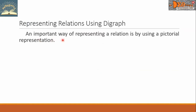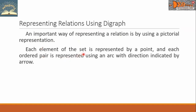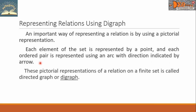An important way of representing a relation is by using a pictorial representation. Each element of the set is represented by a point, and each ordered pair is represented using an arc with direction, indicated by an arrow. This pictorial representation of a relation on a finite set is called a directed graph or digraph.